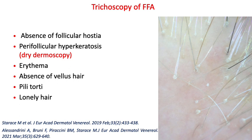The absence of follicular ostia is always present, as it is typical of all cicatricial alopecias. The presence of perifollicular hyperkeratosis, erythema, and pili torti is typical of the active phase of the disease. Absence of vellus hair occurs in early phases, then lonely hair appears in the late stage. If you want to see activity and perifollicular hyperkeratosis, always use dry dermoscopy — do not use water or any liquid as an interface.